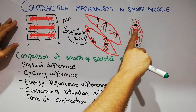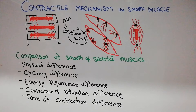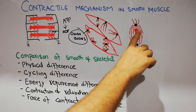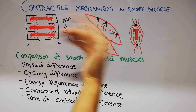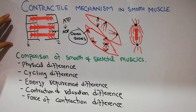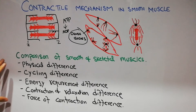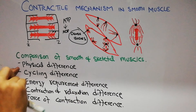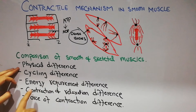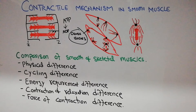Similarly, the cross bridges of the myosin and actin filament start interacting when calcium is released and ATP is broken down. But there are a few differences between skeletal and smooth muscles as well — the physical appearance difference, the cycling difference, the energy requirement difference, the contraction and relaxation difference, and the force of contraction difference.